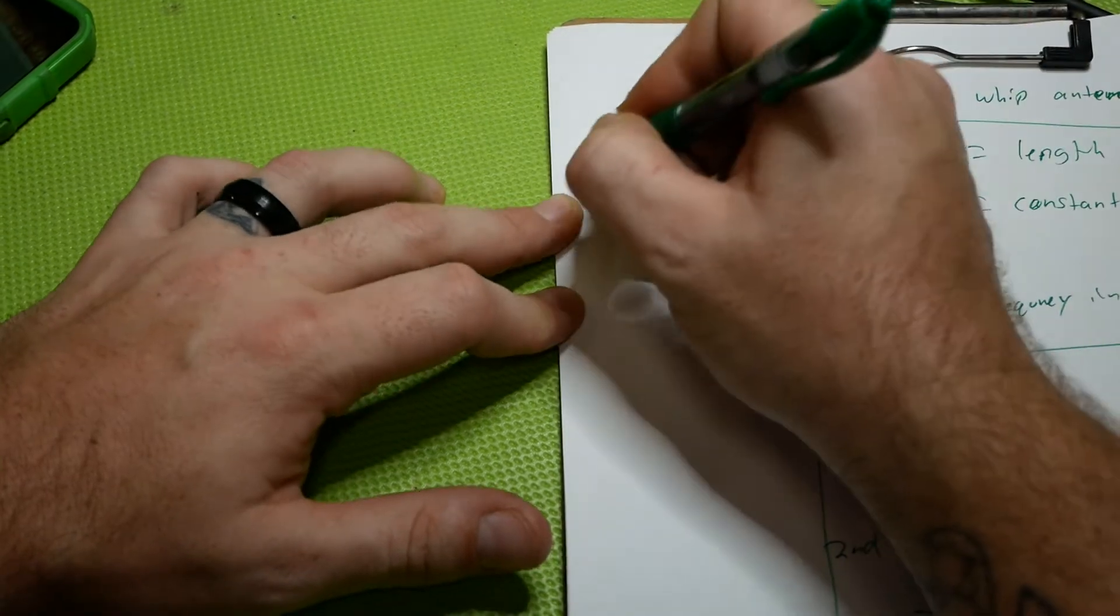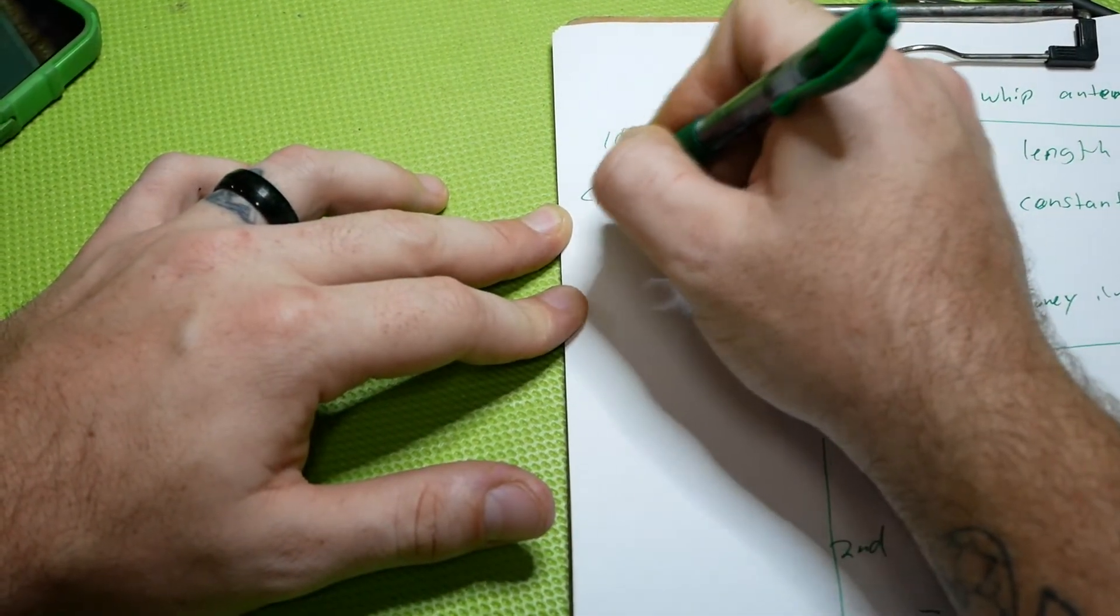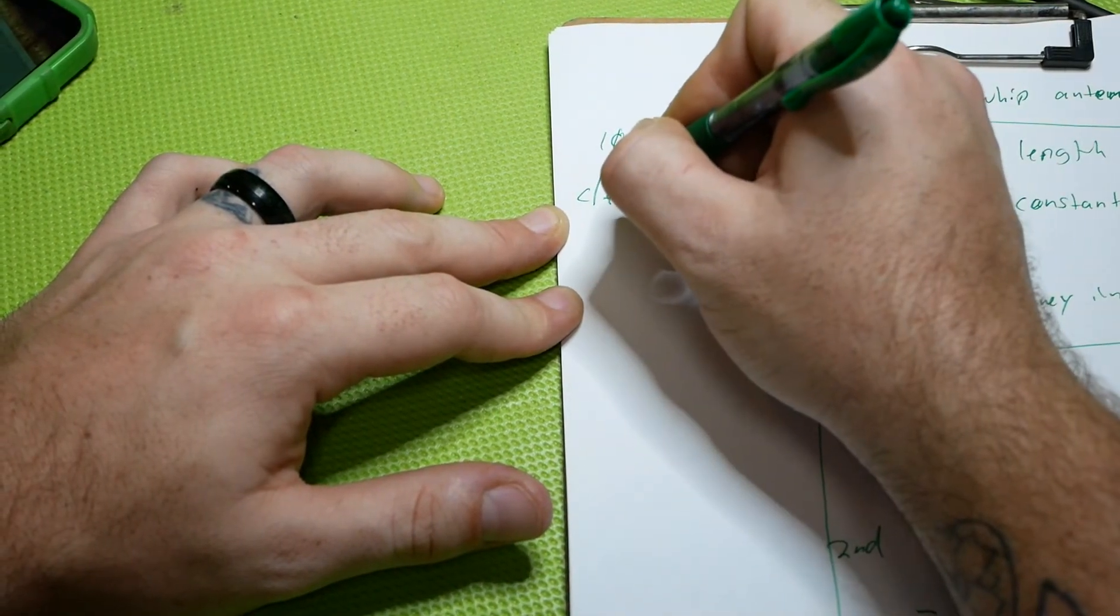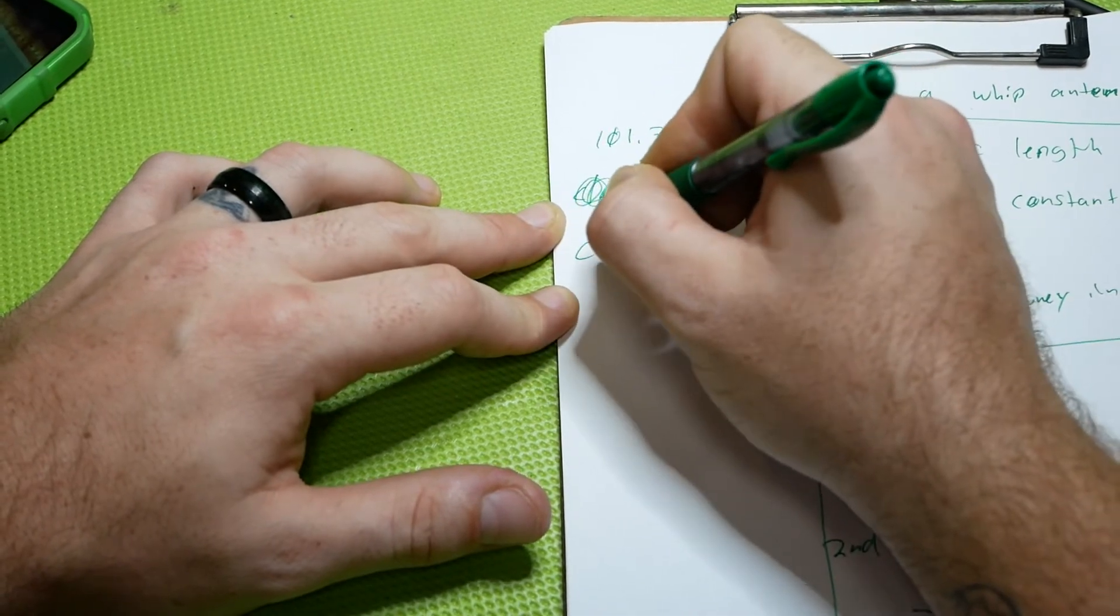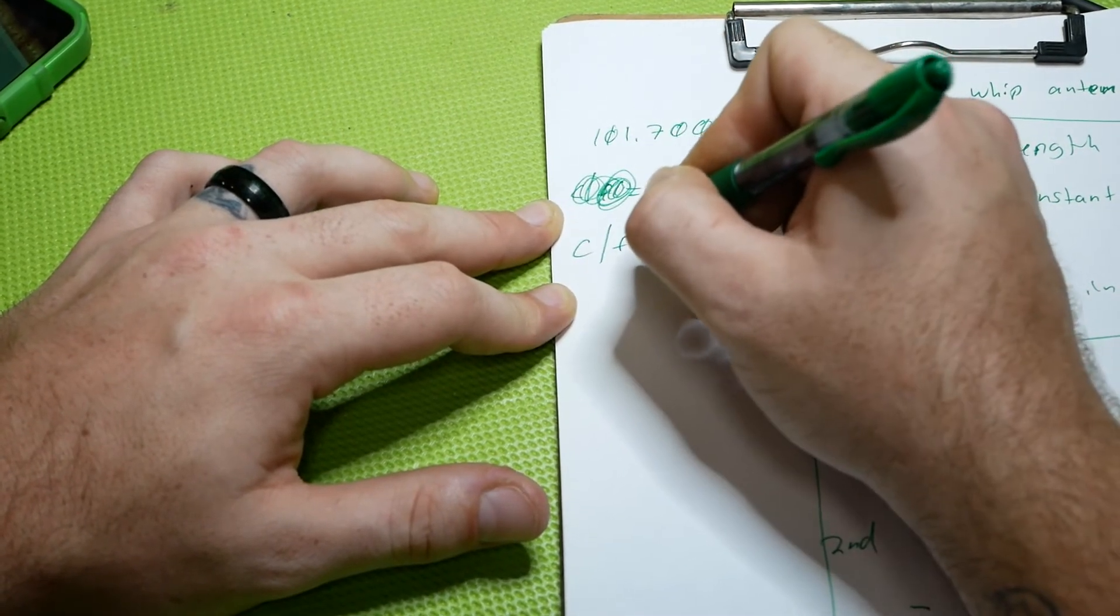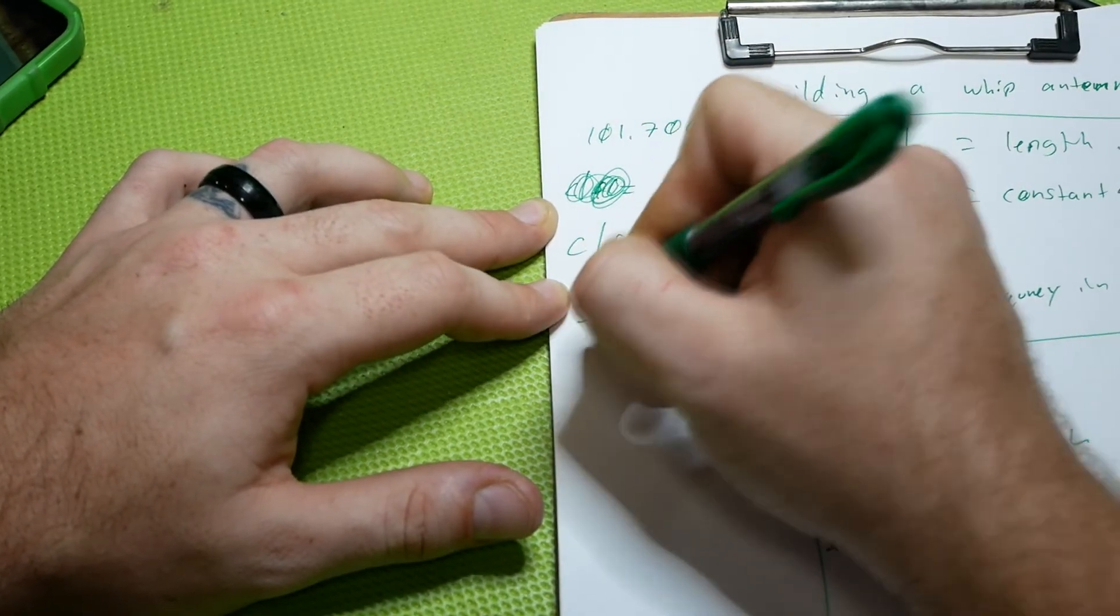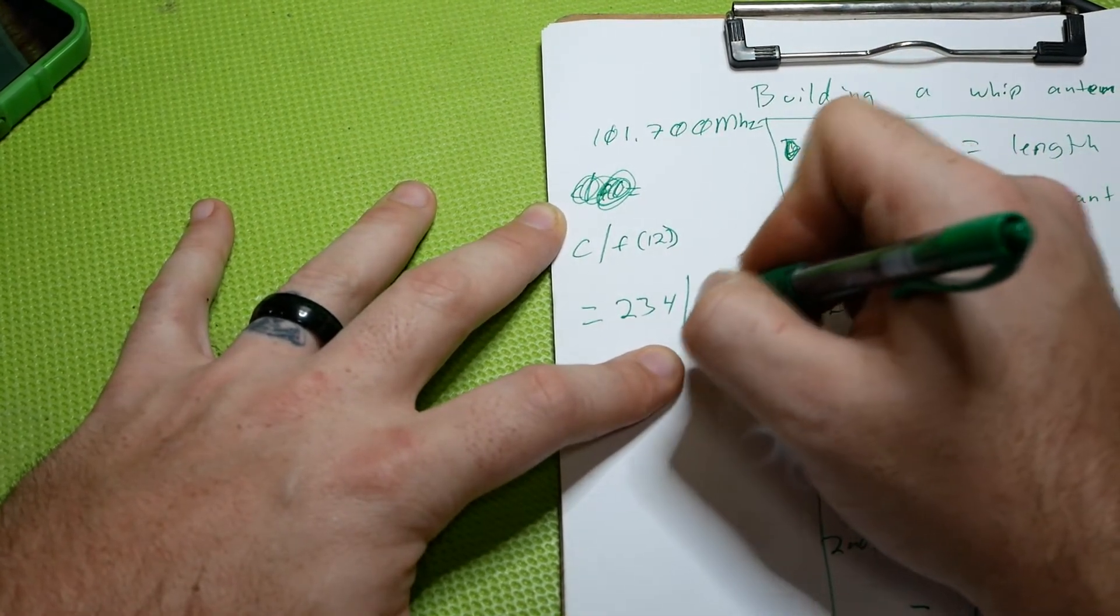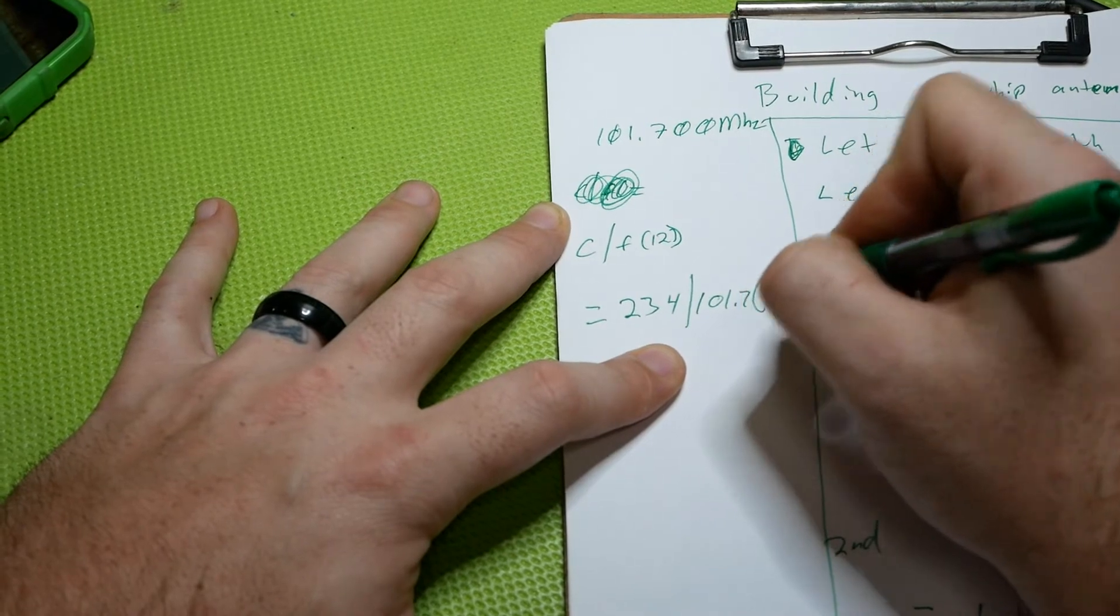So the way you would write this formula would be your constant divided by frequency times 12. I'm going to have to start that over. I apologize. Constant divided by frequency times 12, which is equal to 234 divided by 101.7 times 12. Now, that's our whole formula.